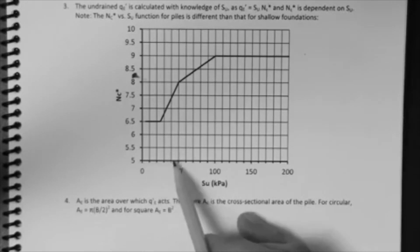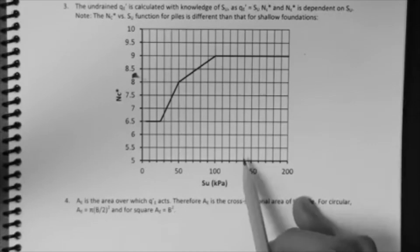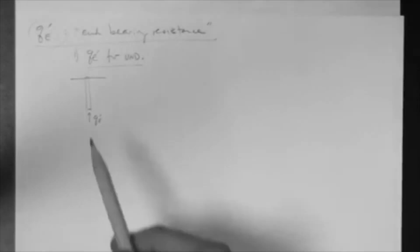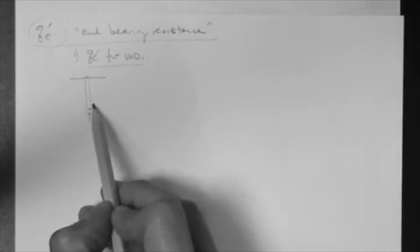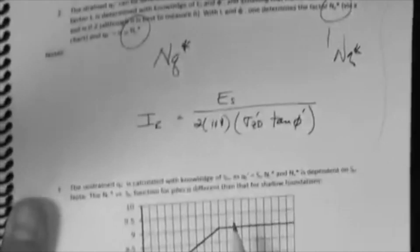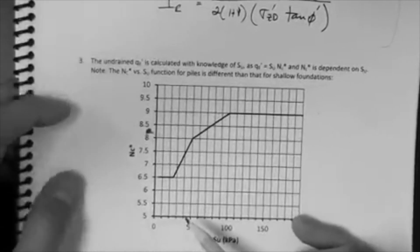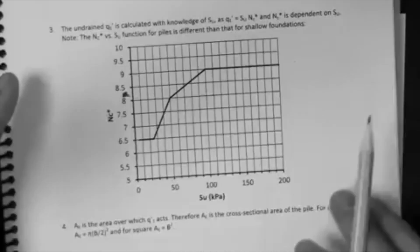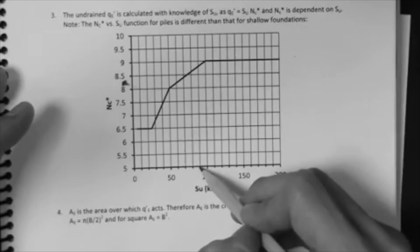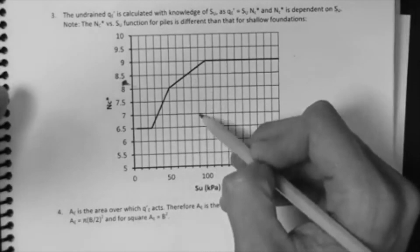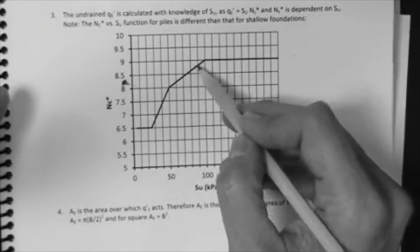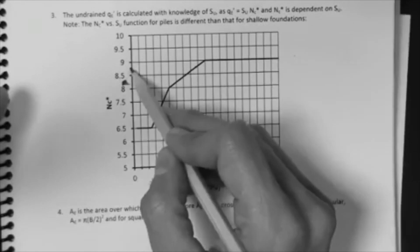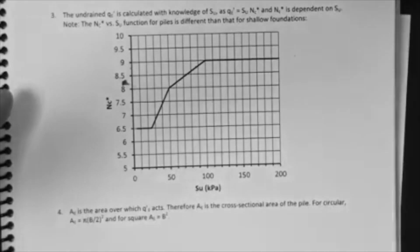So, depending on the Su that you have, where? Down here, in this area, depending on that Su, the Su of the soil in this area, or in that zone, let's say it's, I don't know, 90 kPa, then your Nc* is 8.75, in that case.